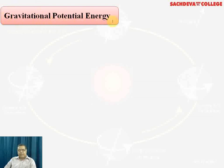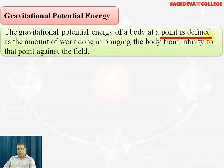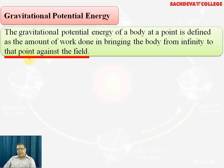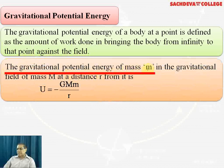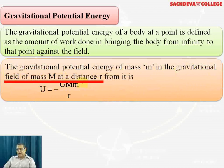Gravitational potential energy is comparable to electrical potential energy, which equals -kq₁q₂/r. Similarly, gravitational potential energy is given by U = -GM₁M₂/r, where M₁ and M₂ are the masses, r is the distance between them, and G is the gravitational constant. It is defined as the work done in bringing the body from infinity to a point against the gravitational field.